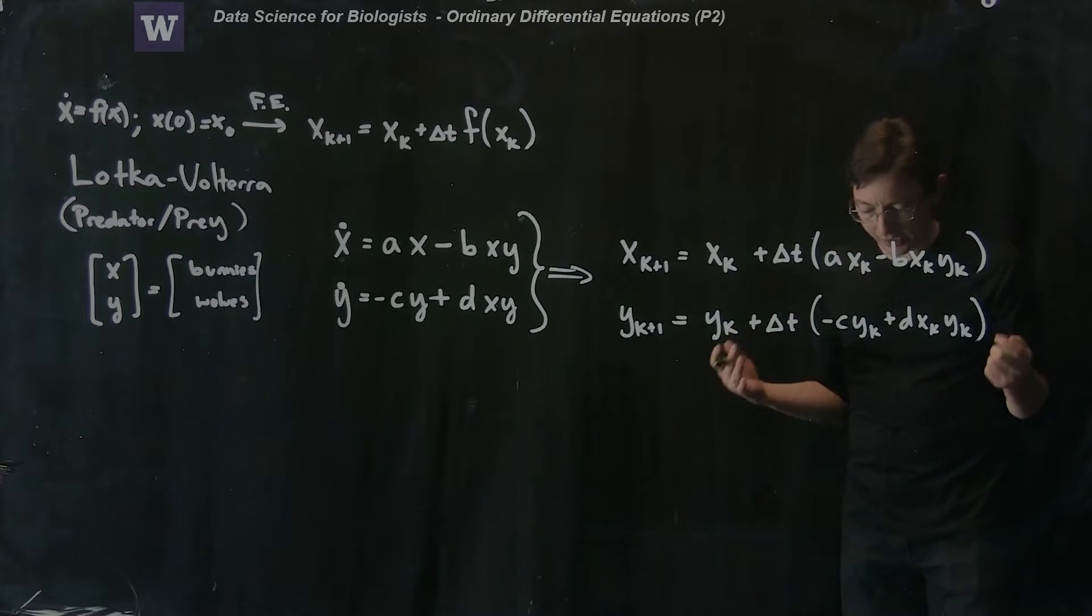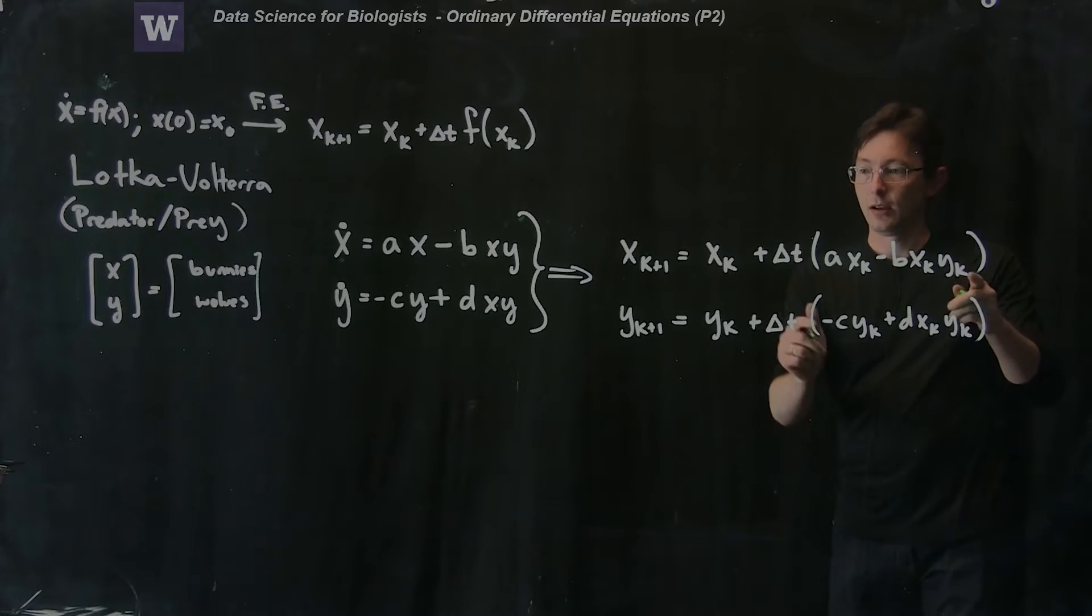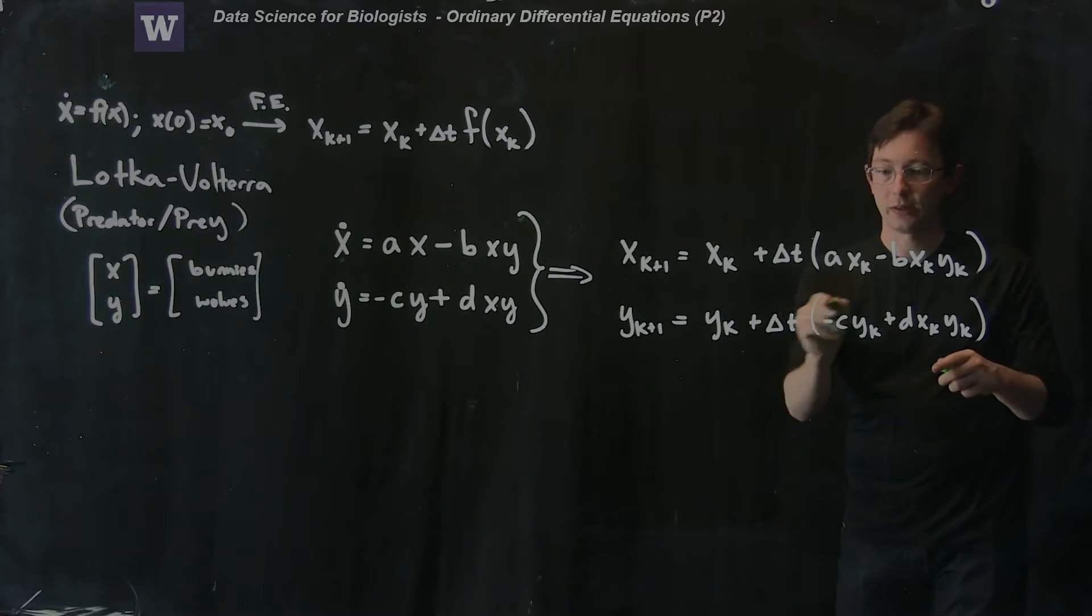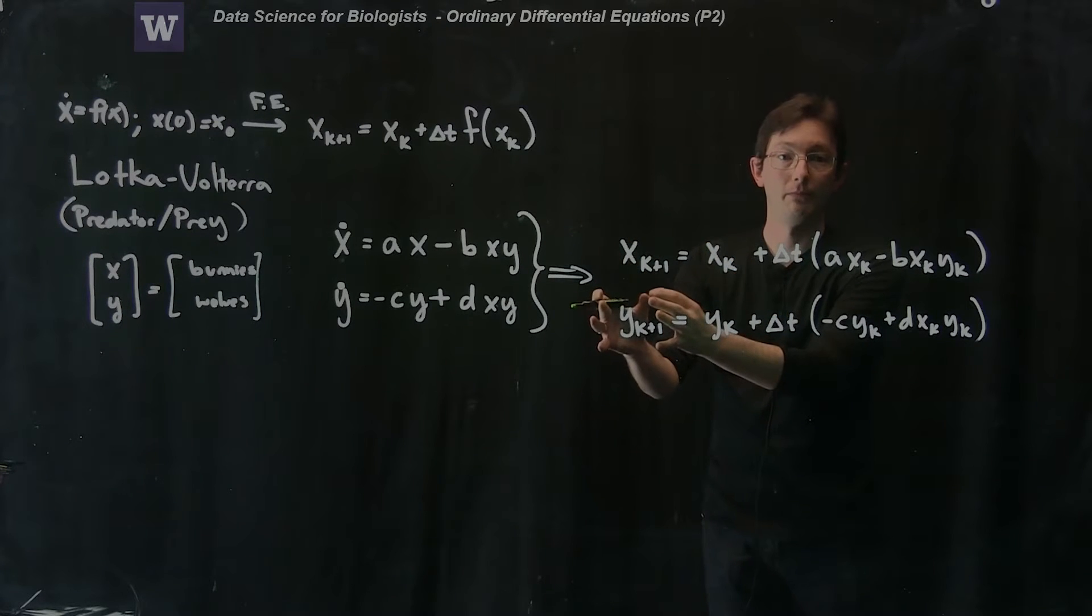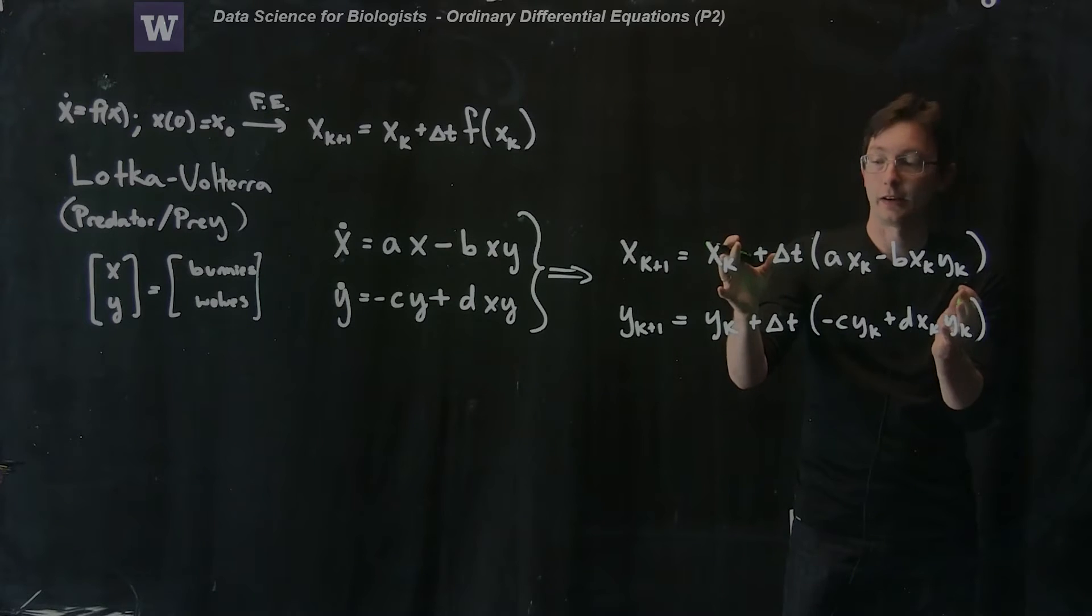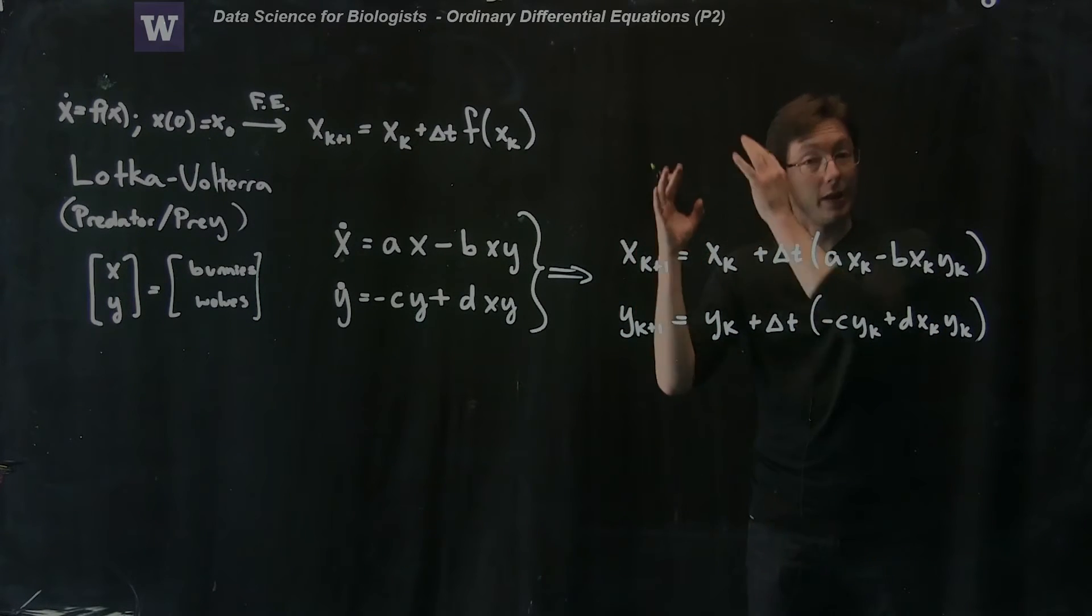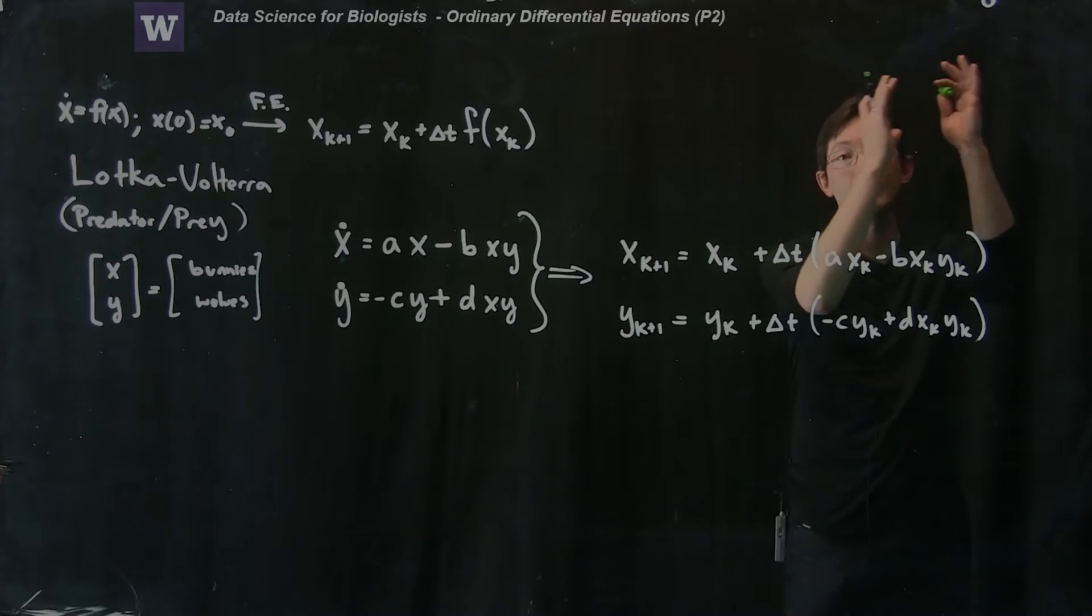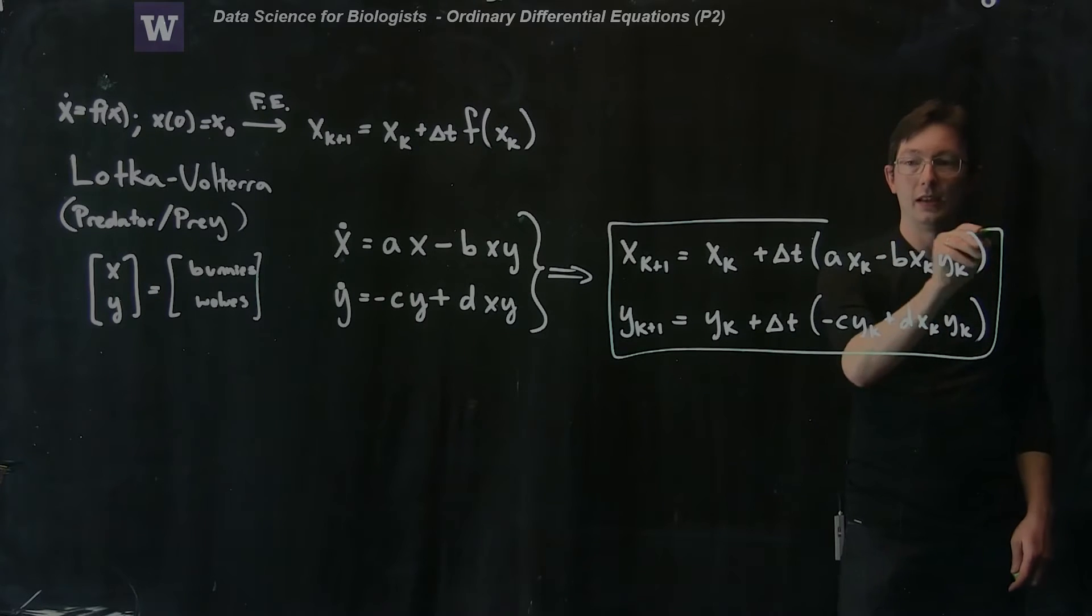This might look a little complicated, but it's actually relatively straightforward. If I have x0 and y0, all of the terms on the right would just depend on x0 and y0, and I could plug those in and I would get x1 and y1. Now that I know x1 and y1, I can plug those into the right-hand sides and I would get x2 and y2, and so on and so forth. I can step this forward and see how my bunny and wolf populations evolve in time. This is my nice forward Euler scheme.